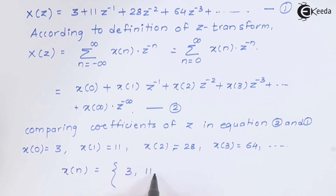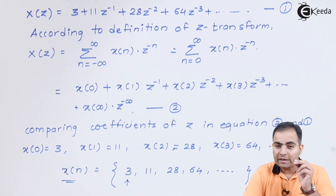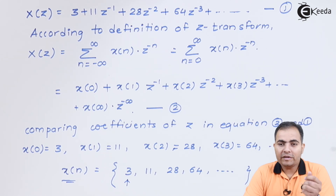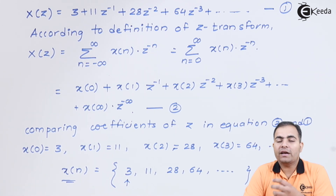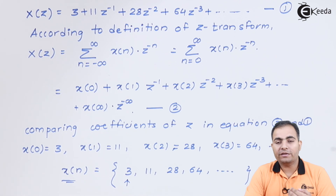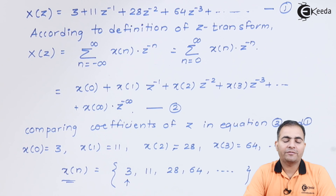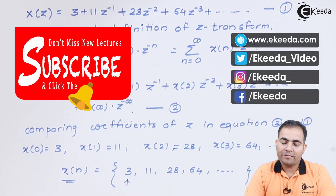So we can write the sequence with an arrow marking the origin at n equals 0. This is our result. In summary, in the power series expansion method, first check the ROC: if causal, arrange the denominator from higher power of Z to lower power of Z, then perform long division. If ROC is non-causal, reverse the process. Next we will study numericals based on the residue theorem — stay tuned to Ikeda and subscribe for more videos.